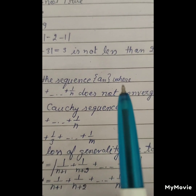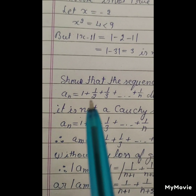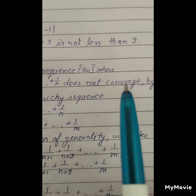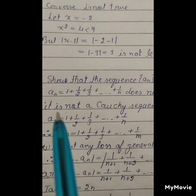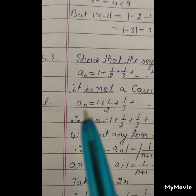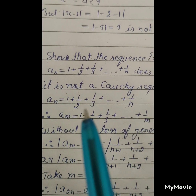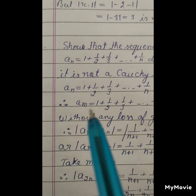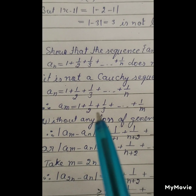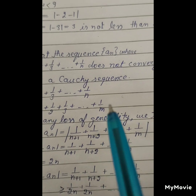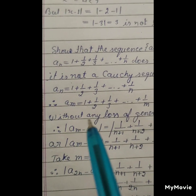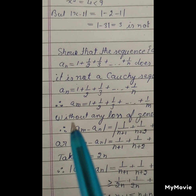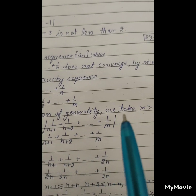Show that the sequence aₙ, where aₙ = 1 + 1/2 + 1/3 + ... + 1/n, does not converge by showing that it is not a Cauchy sequence. We define aₙ = 1 + 1/2 + 1/3 + ... + 1/n and aₘ = 1 + 1/2 + 1/3 + ... + 1/m.